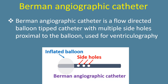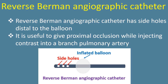The Berman angiographic catheter is a flow-directed balloon-tipped catheter with multiple side holes proximal to the balloon, used for ventriculography. The Reverse Berman angiographic catheter has side holes distal to the balloon, which is useful for providing proximal occlusion while injecting contrast into a branch pulmonary artery.